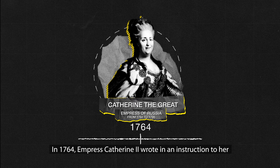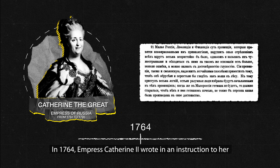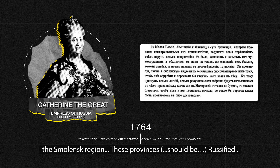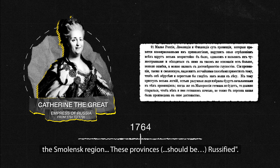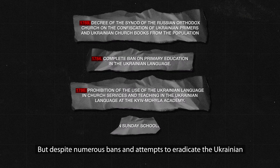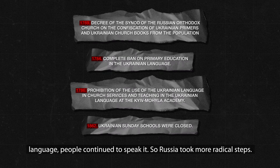In 1764, Empress Catherine II wrote in an instruction to her general prosecutor that Little Russia, Livonia, Finland, and the Smolensk region — these provinces should be Russified. But despite numerous bans and attempts to eradicate the Ukrainian language, people continued to speak it.